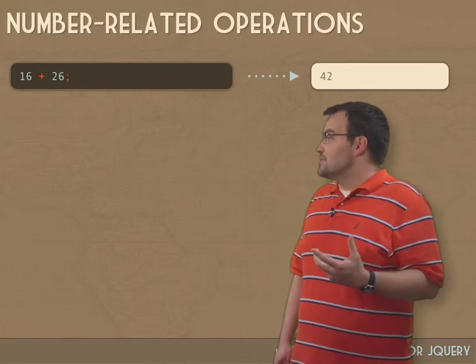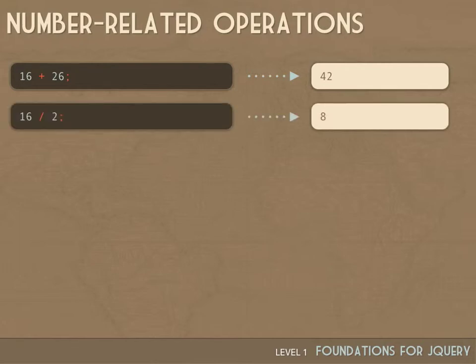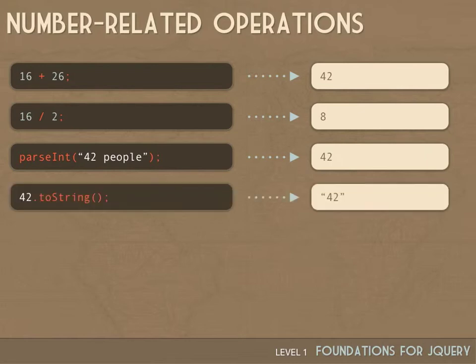Let's look at a few number-related operations. We've got plus, divide, and multiply — asterisk — typical for most programming languages. There's a global function called parseInt that's useful. When a user enters data in a dialog box, you can run parseInt on the string to get back the integer. For example, '42 people' converts down to 42 — it finds the first thing that looks like a number in that string. Last, toString — calling toString on the integer 42 gives you back a string, indicated by the quotes.